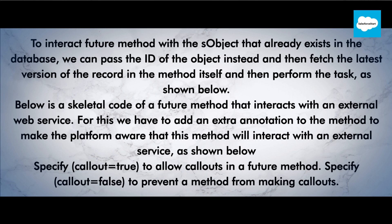Below is a skeletal code of a future method that interacts with an external web service. For this, we have to add an extra annotation to the method to make the platform aware that this method will interact with an external service. Specify callout equals true to allow callouts in a future method. Specify callout equals false to prevent a method from making callouts.